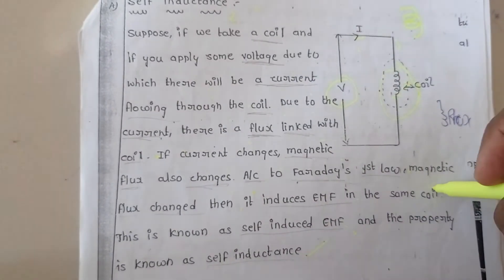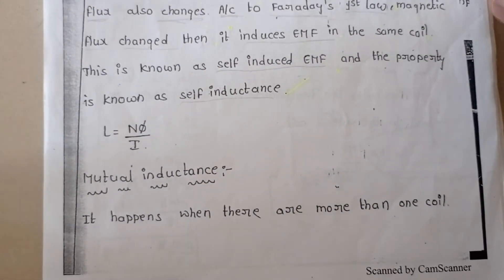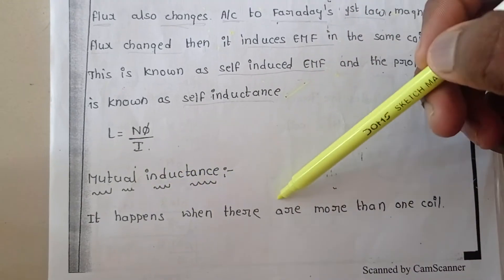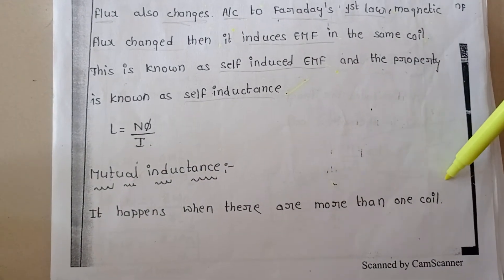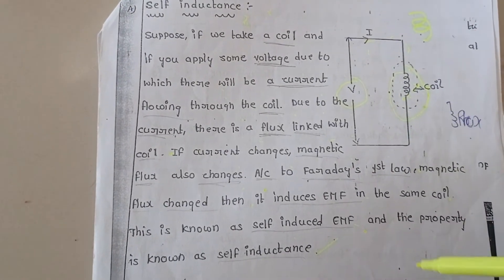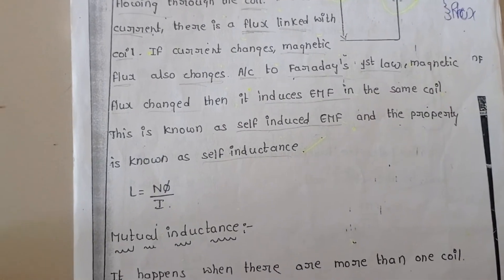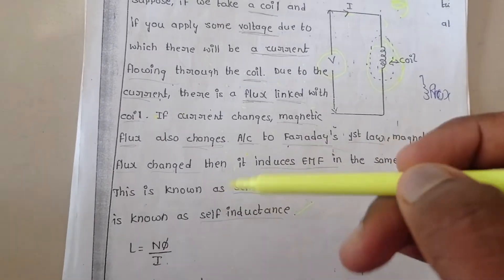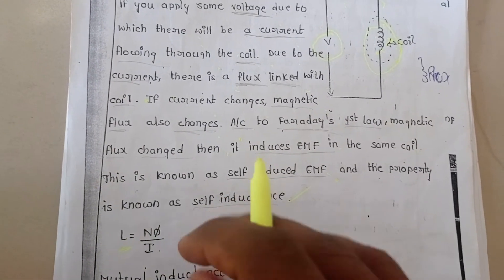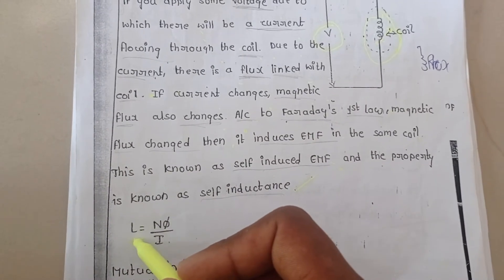Here the magnetic flux is linked with the same coil. Now let's see what is mutual inductance. In self inductance we have only one coil, and in mutual inductance we have two coils. In self inductance, L is the flux linked with the coil, or simply the self inductance.